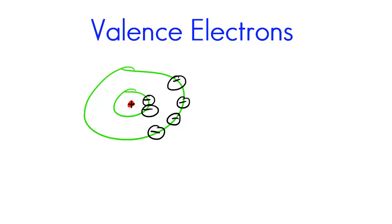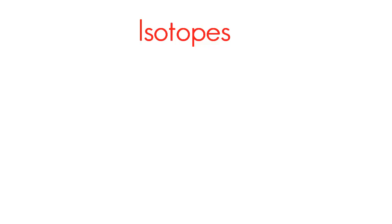So now that we understand what valence electrons are and how they are either lost or gained in chemical reactions, we can now move on to the next topic which is isotopes. Now you might have heard of isotopes before, but if you haven't I'll go ahead and give you a quick review.